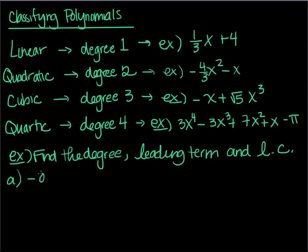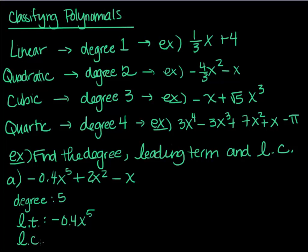I'm going to call leading coefficient LC. So of the following polynomials. How about this one, negative 0.4x to the fifth plus 2x squared minus x. So the degree of this polynomial is the largest exponent. So that's pretty clear to see that that is five. The leading term, if you want to be like the cool kids, is this term that contains the highest degree. So that would be negative 0.4x to the fifth. And then what is the leading coefficient? It's just the coefficient of that term. So negative 0.4. So pretty easy, right?